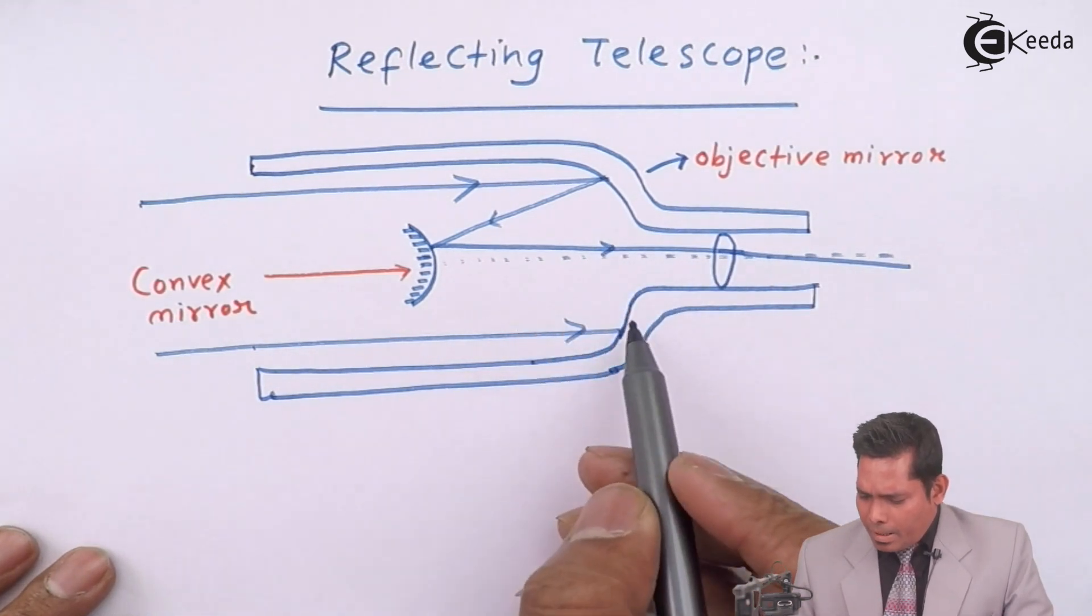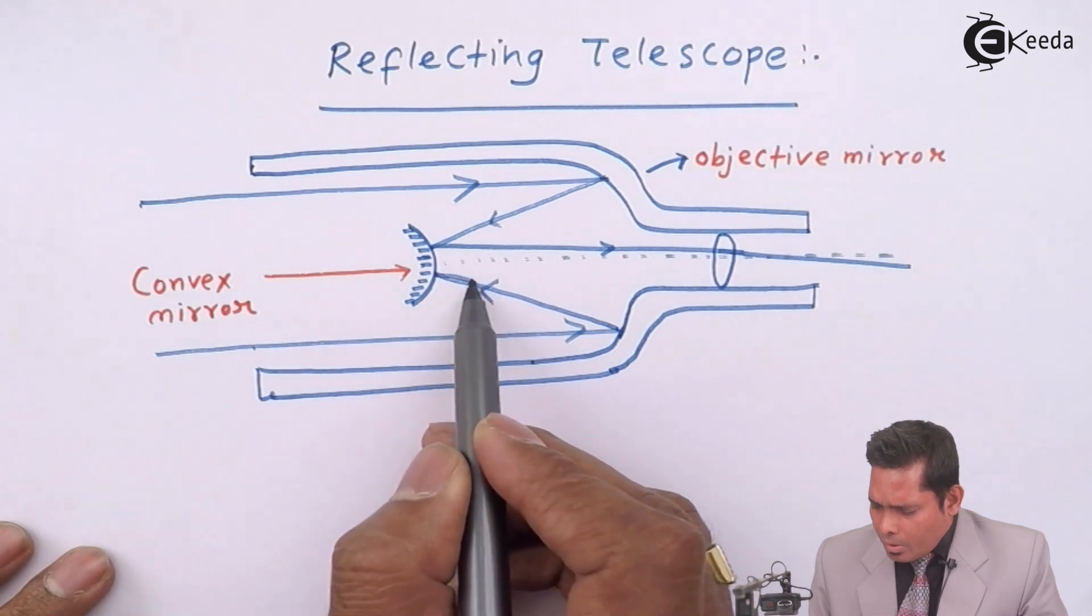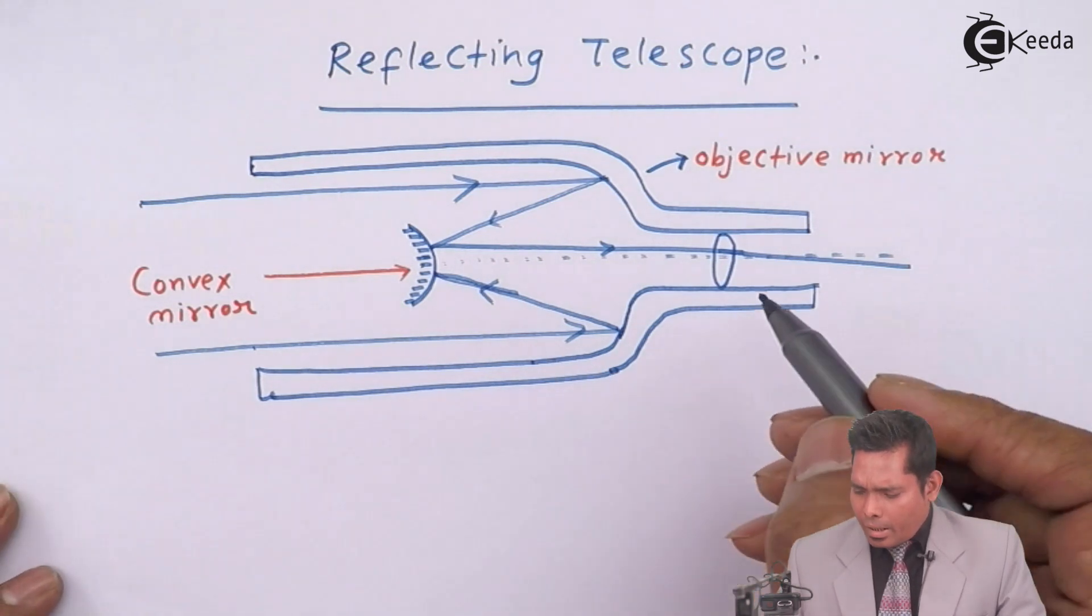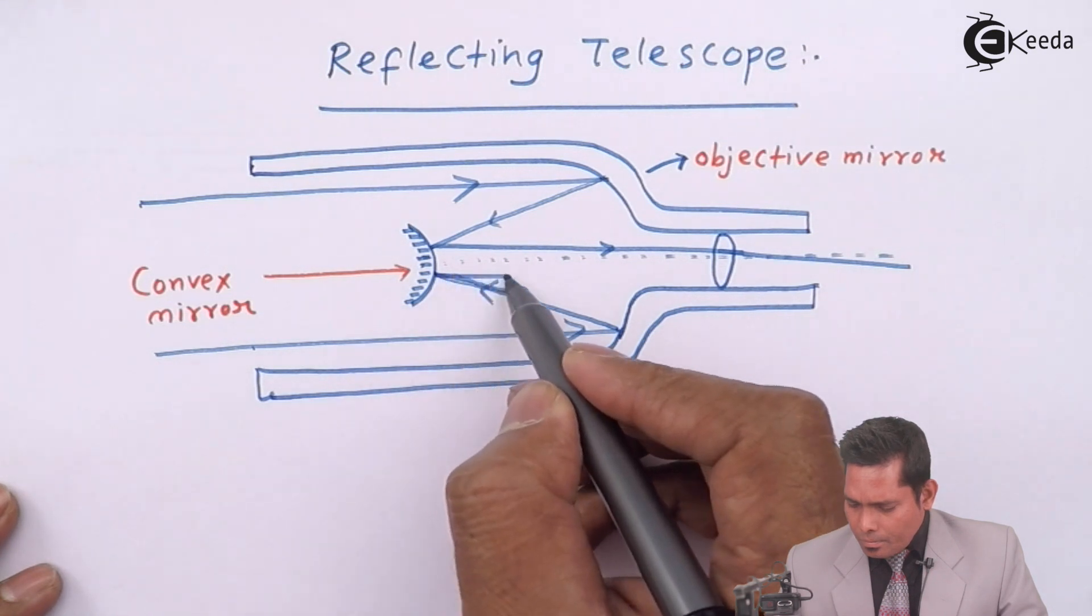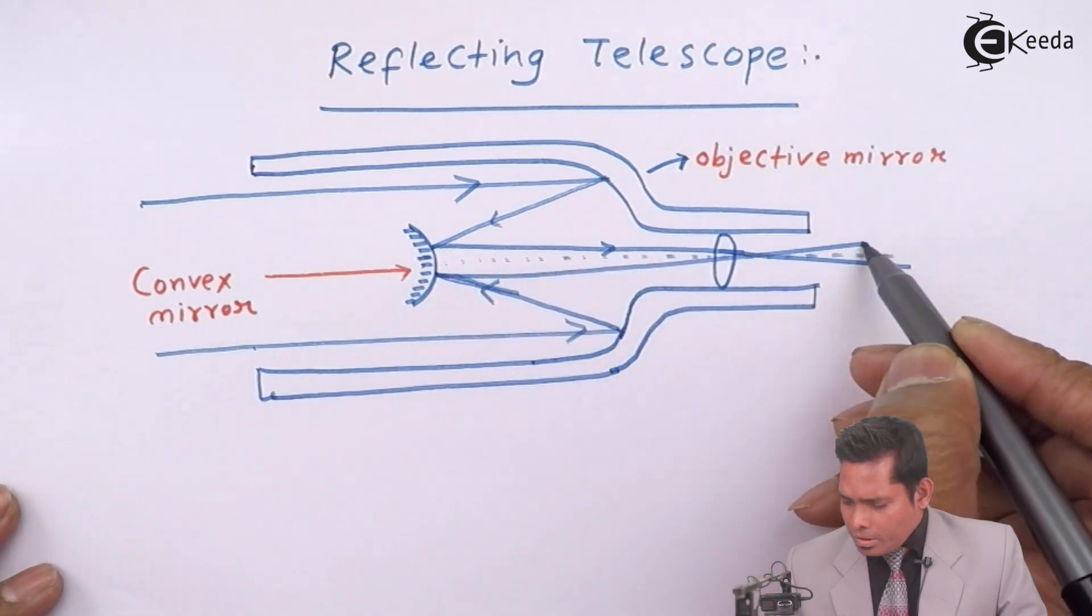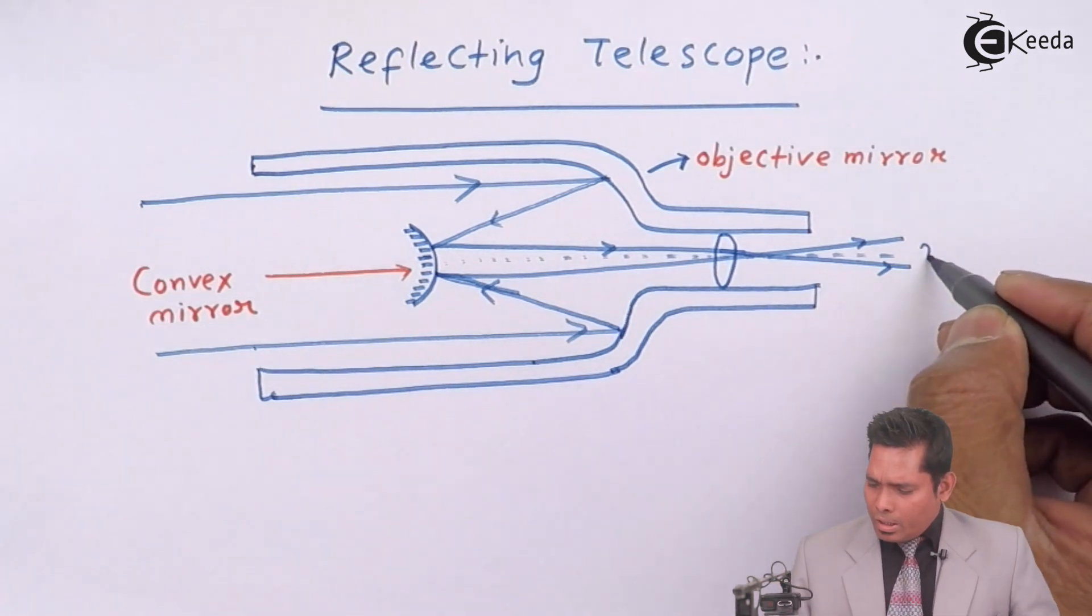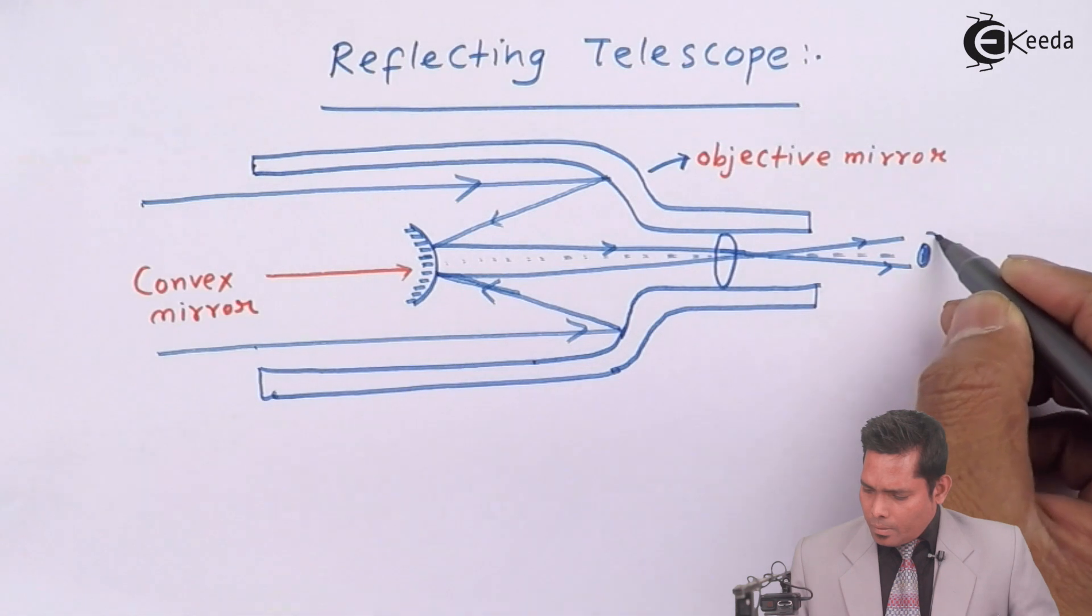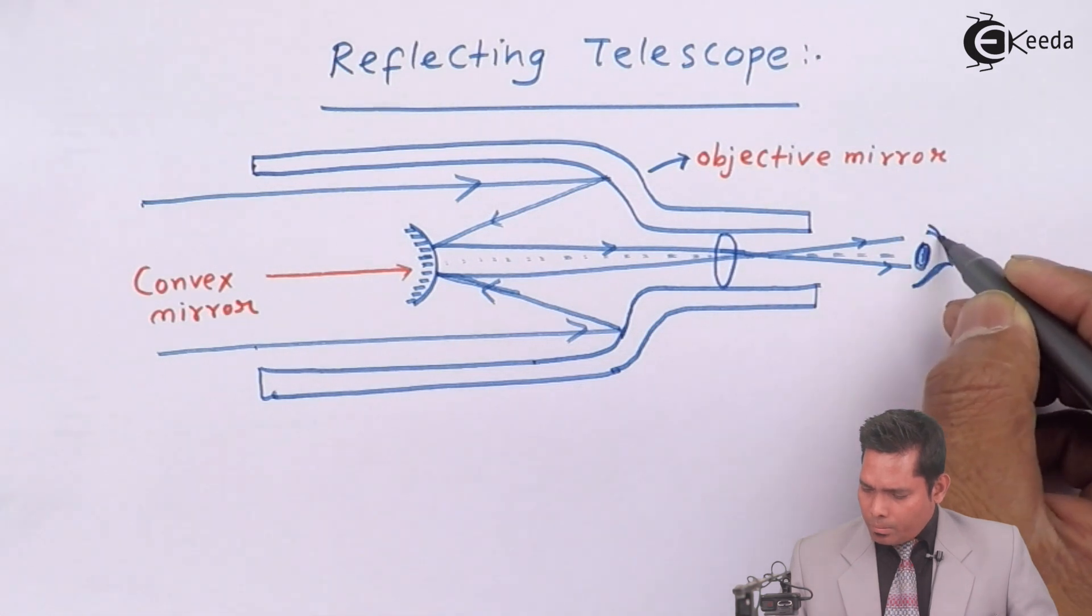Similarly, the one coming from this side falls on here, on this secondary mirror, and gets reflected toward the lens, following this path.